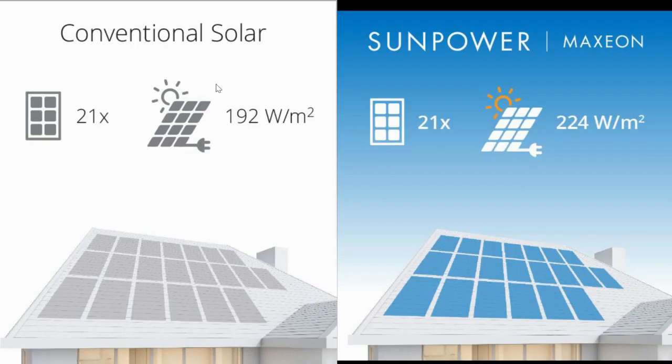Maxeon also shows that they are generally able to be more efficient with the solar energy that is brought into each panel. So here you can see that for the same number of solar cells, conventional solar panels, which are unnamed here, produce about 192 watts per meter squared. Whereas the Maxeon SunPower system produces about 224 watts per square meter.